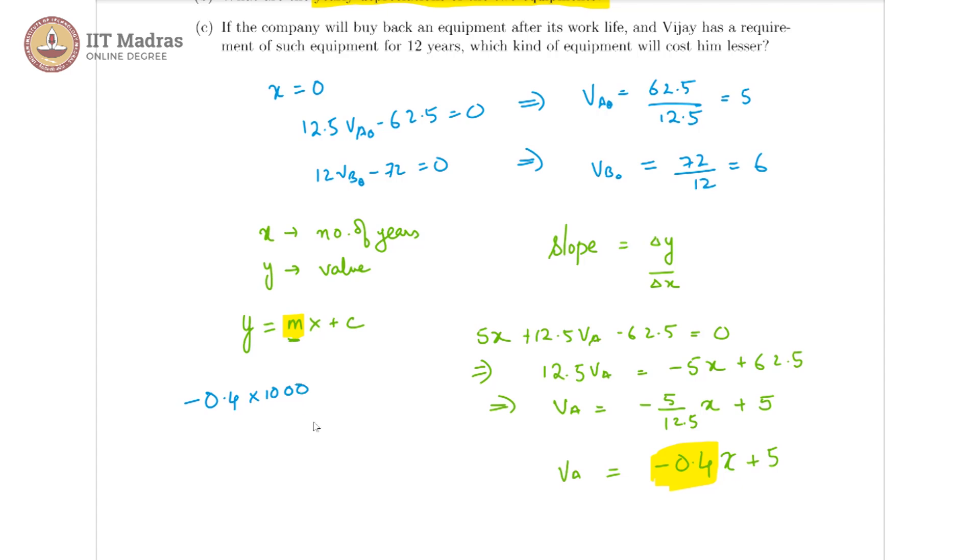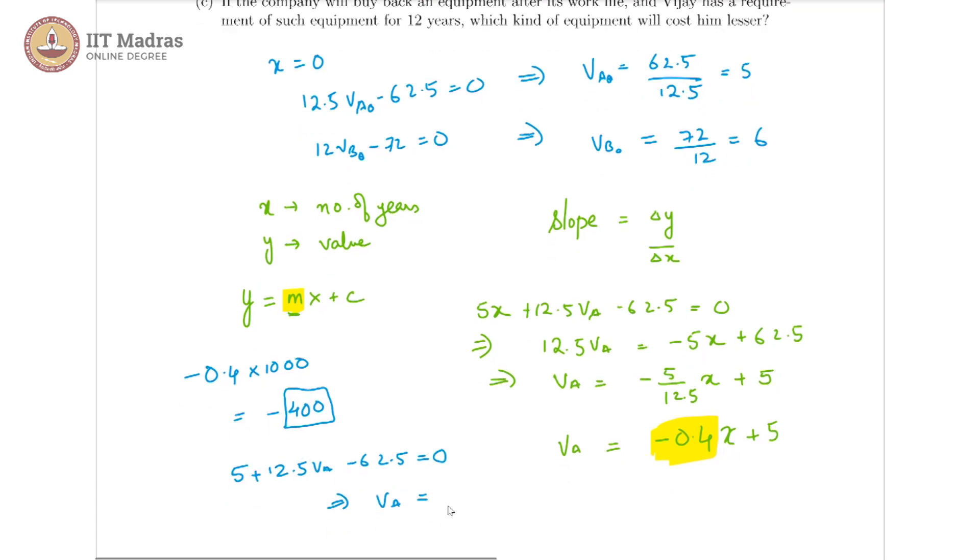Because we are taking everything in thousands, so that is basically minus 400. So this is the depreciation, 400 is the depreciation every year for the company. We can also verify this by looking at the values of VA for year one. So when x is equal to 1, we have 5 plus 12.5 VA minus 62.5 is equal to 0.